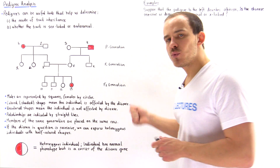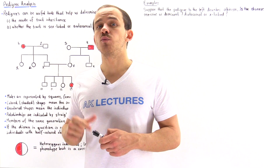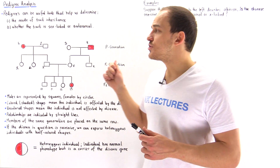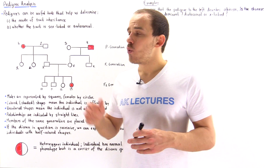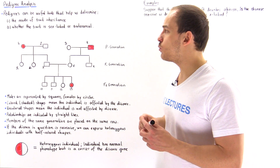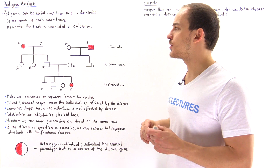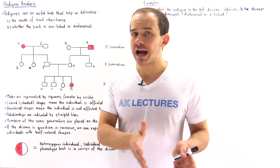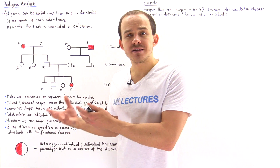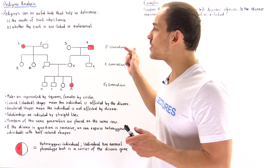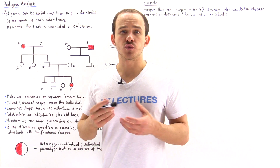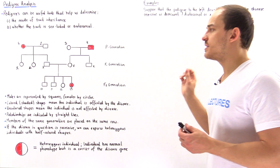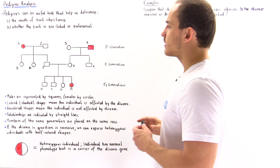Let's describe the different components of a pedigree, beginning with the shapes. We have two types: squares and circles. Squares describe a male individual and circles describe a female individual. We also have colored and uncolored shapes. A colored shape describes an individual that has the phenotype for that particular disease — they express that disease. An uncolored shape describes an individual that does not show that phenotype and is not affected by that disease.